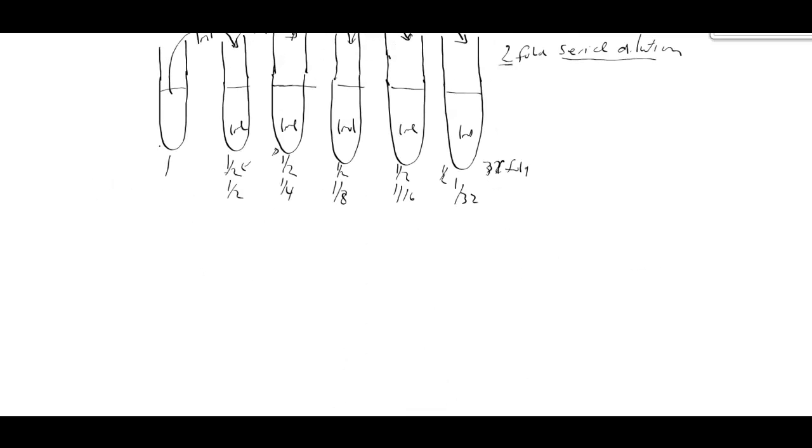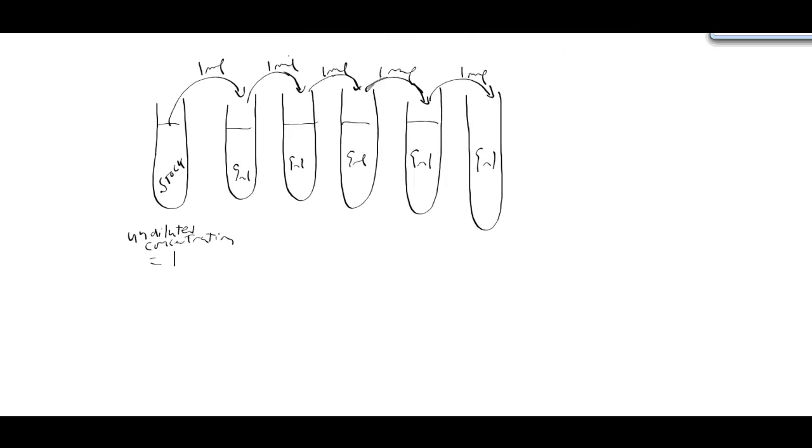So let's just do another quick example here to just show another one. So here we've got another set of tubes. In this case we have our stock here in this first tube. And then we have our serial dilution going on. We have 9 mls in each one. And we're moving 1 mil across mixing it. So there 9 plus 1. So that's a 1 to 10.